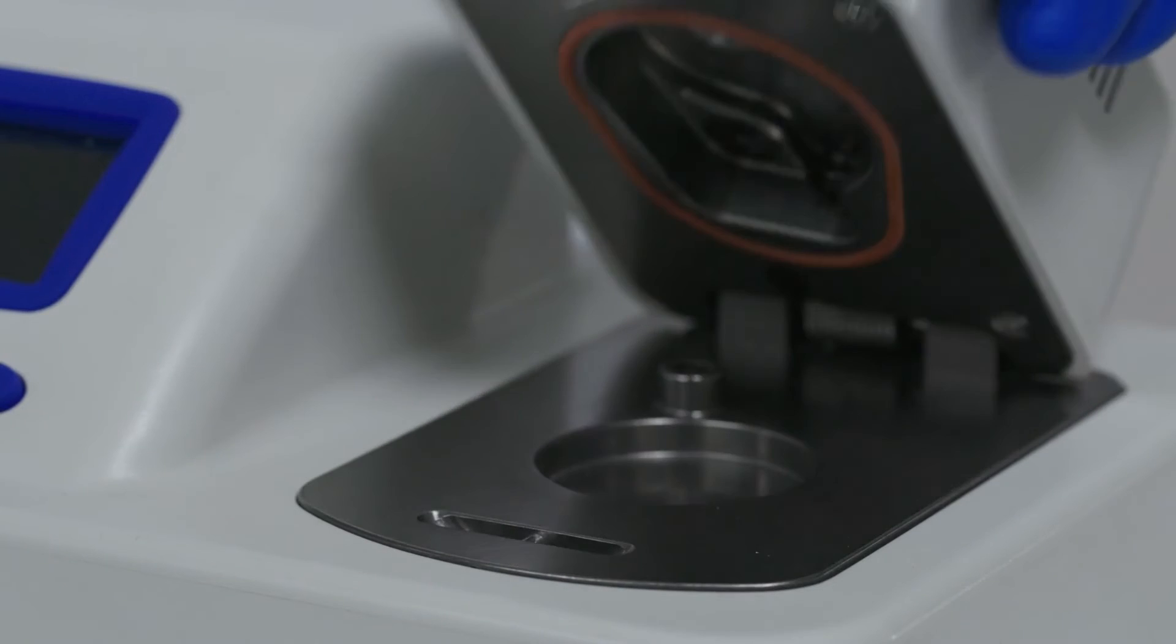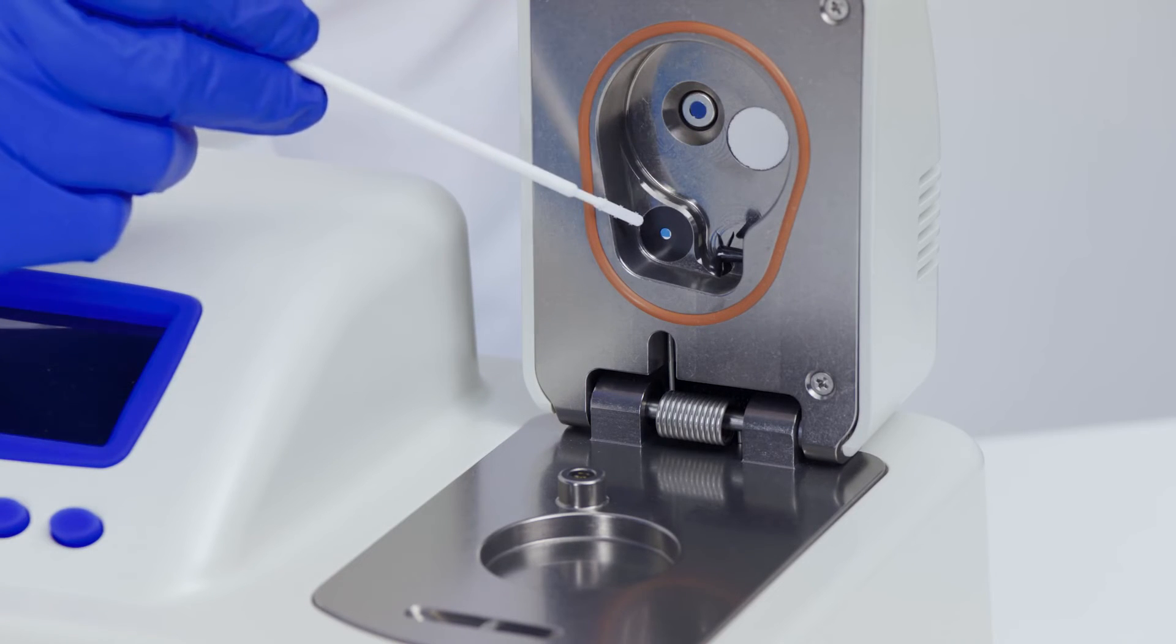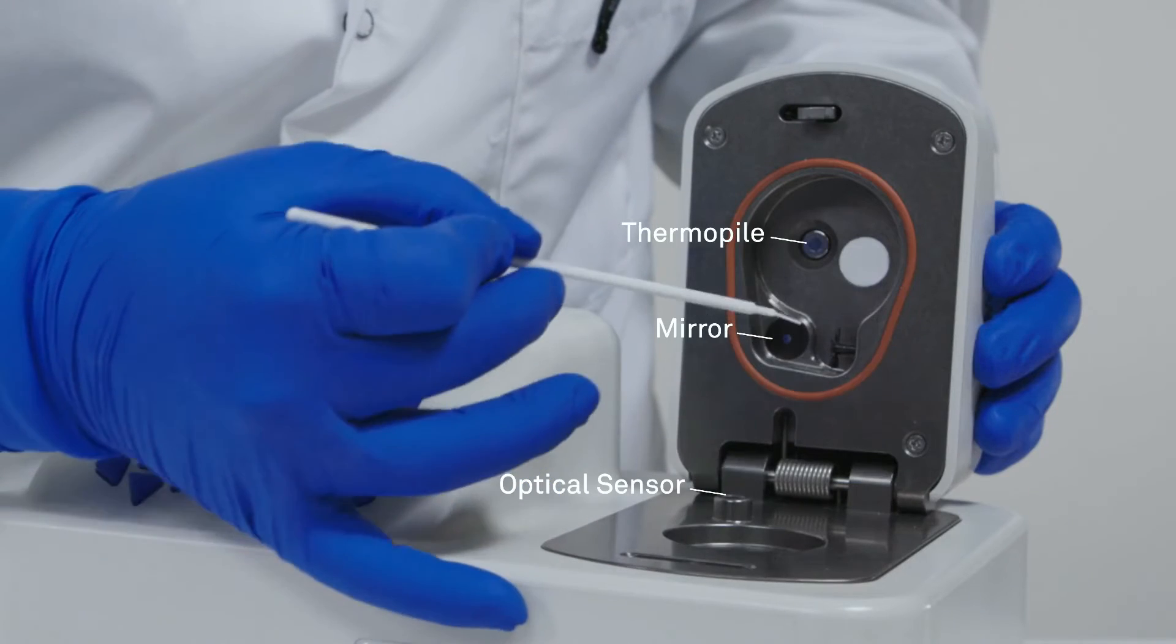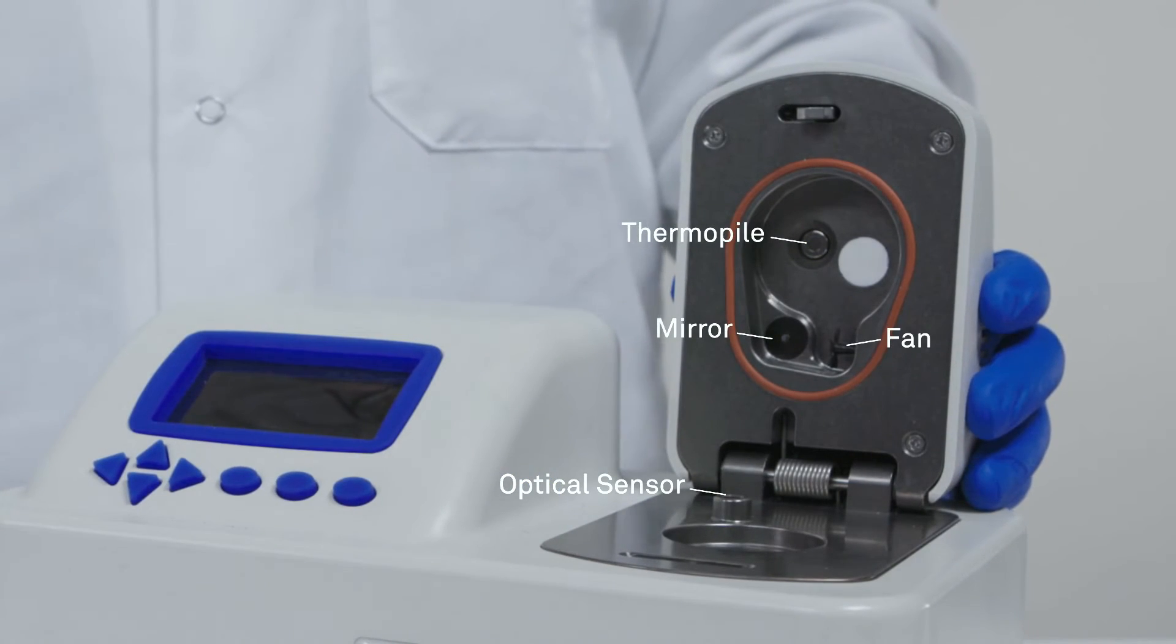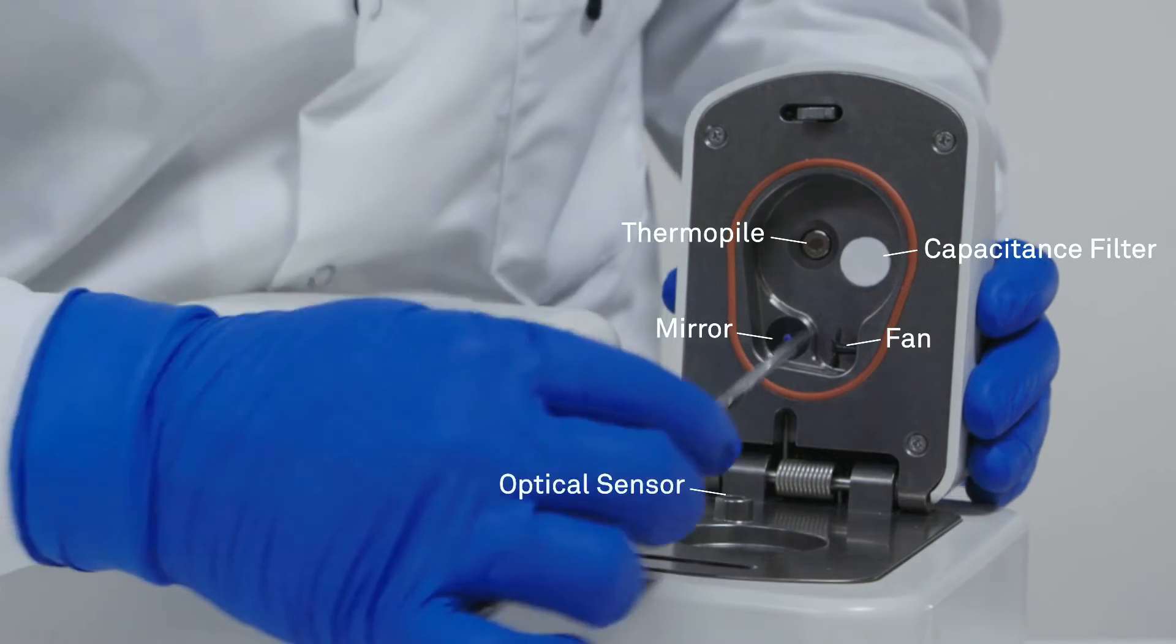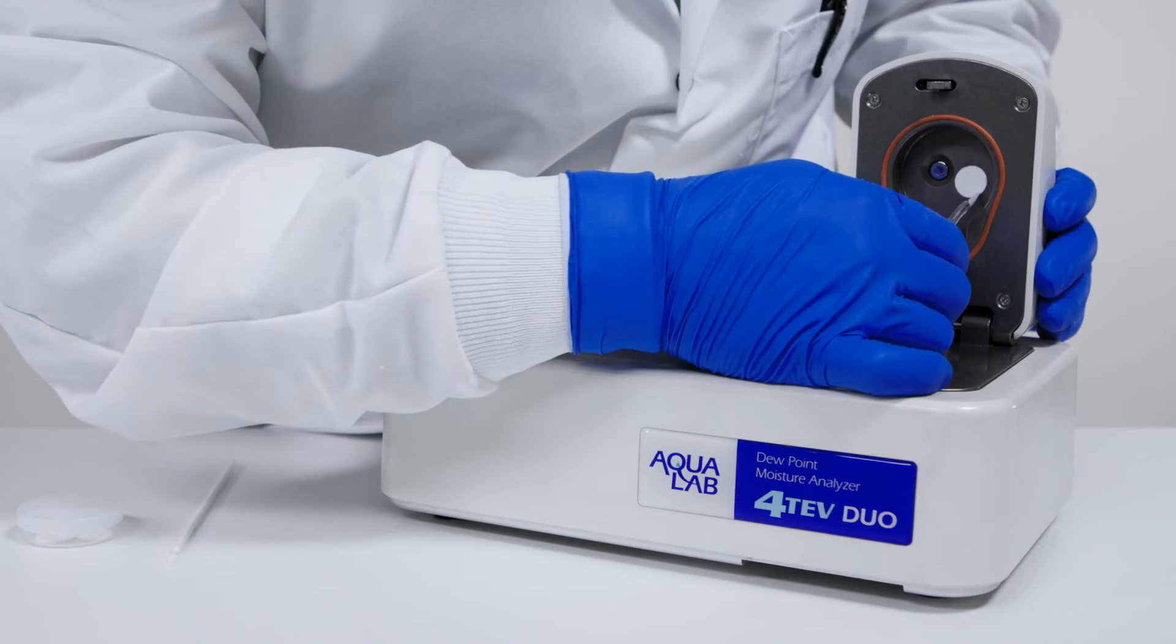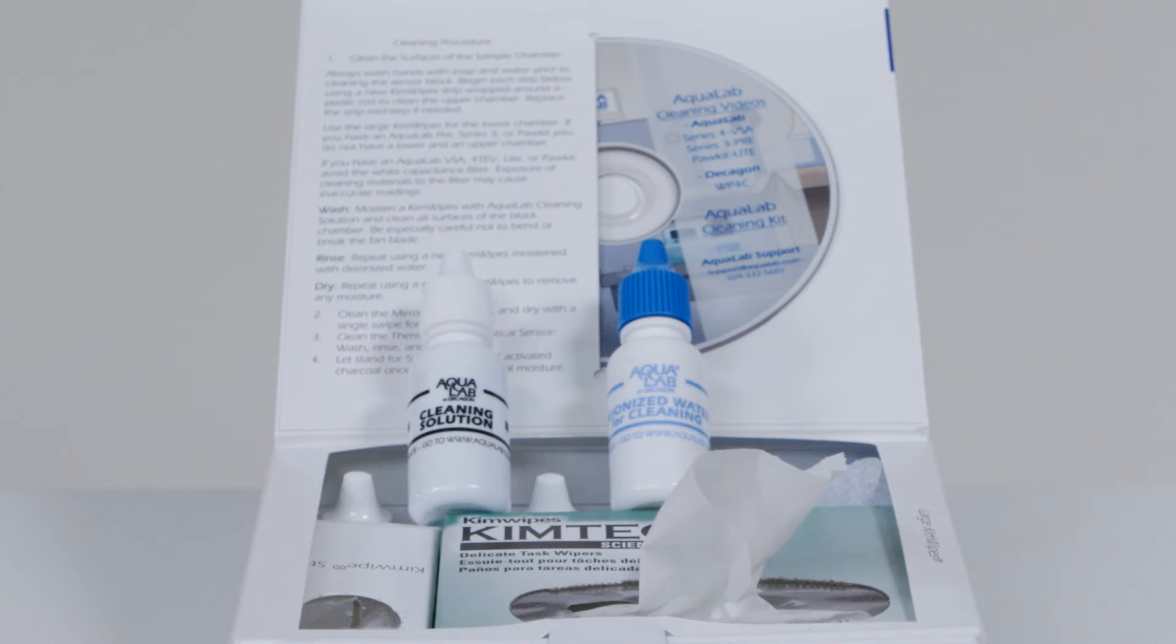Open the lid to the sample chamber. You should see the mirror, the thermopile, the optical sensor, and the fan. The Aqualab 4-TEV, vapor sorption analyzer, pocket, and light also have capacitance filters. You should not clean or allow any moisture to come into contact with the white filter covering the capacitance sensor. If the filter has been contaminated, it needs to be replaced. Replacement filters are included in your cleaning kit.